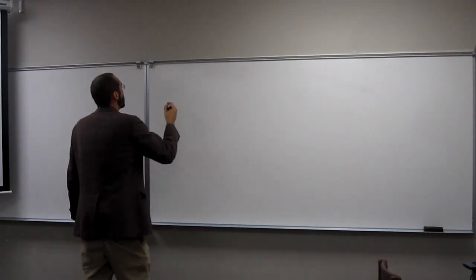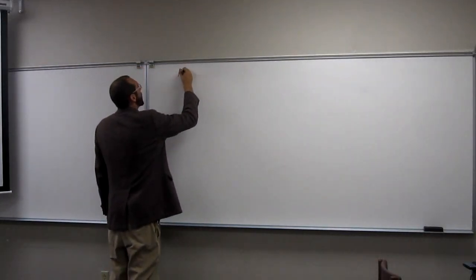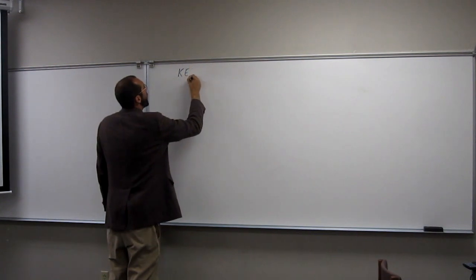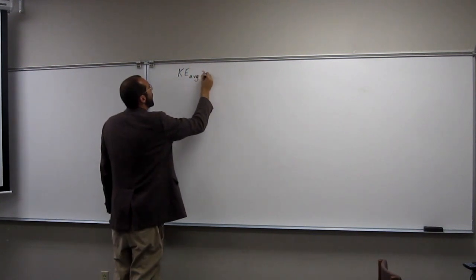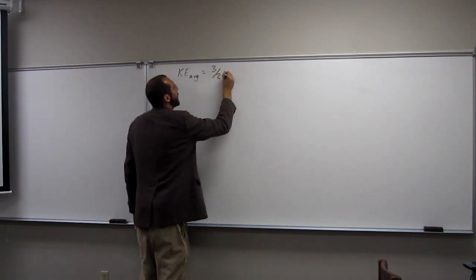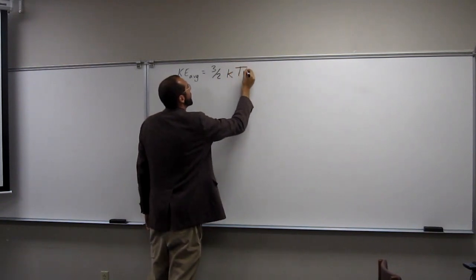So room temperature is 25 degrees Celsius, and the kinetic energy average is going to be 3 halves kT.